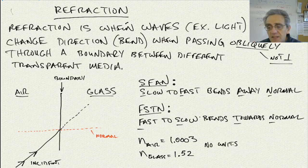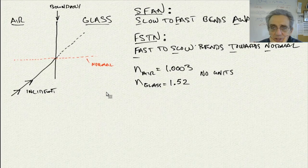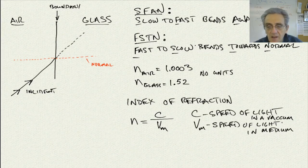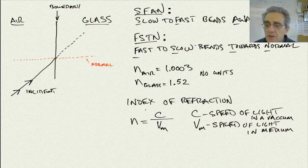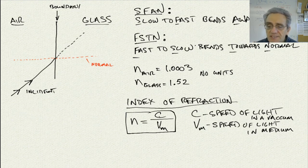N is the index of refraction — it has no units, it is simply a ratio or a number. The index of refraction is defined by the equation n = C / Vm, where C is the speed of light in a vacuum — 3 × 10⁸ meters per second — and Vm is the speed of light in the medium.